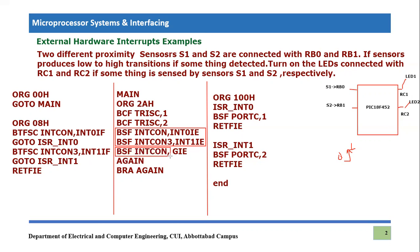The next line enables global interrupts by setting GIE — global interrupt enable — to one. In this example the main program has no other task to perform, so we simply branch back to the same instruction again and again using 'BRA again'. The microcontroller will continuously loop on this instruction while waiting for interrupts, since both sensors are handled entirely through interrupt service routines.